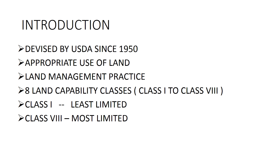There are total 8 land capability classes, symbolized in Roman numerals — Class 1 to Class 8. Class 1 is the land capability class having very less limitation, and Class 8 refers to the maximum limitation of land.